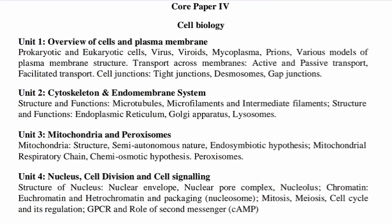Let's start with Unit 1: Overview of Cells and Plasma Membrane. This covers cell structure, cell function, and plasma membrane. We have a selectively permeable membrane. Plasma membrane transport includes osmosis, active transport, passive transport, facilitated diffusion, and facilitated transport. These are the most important topics.